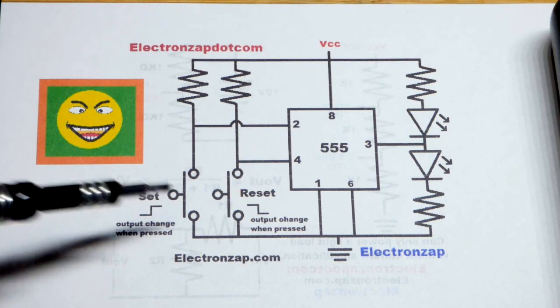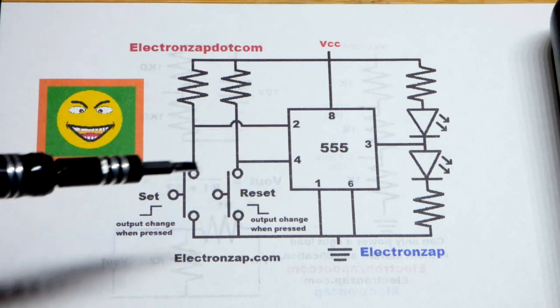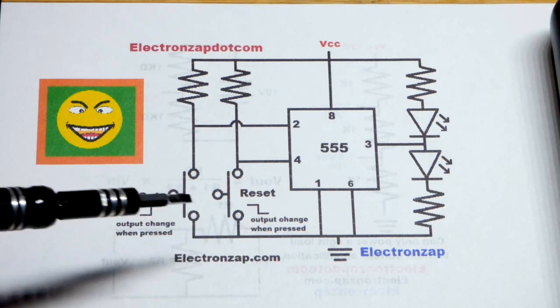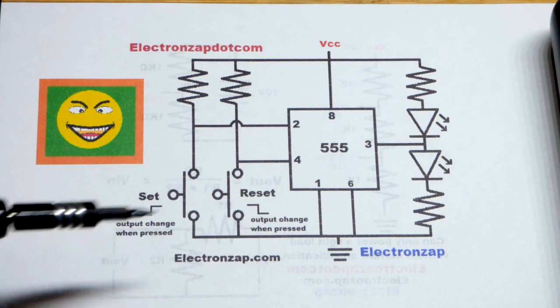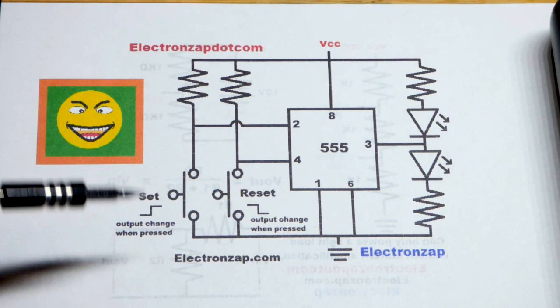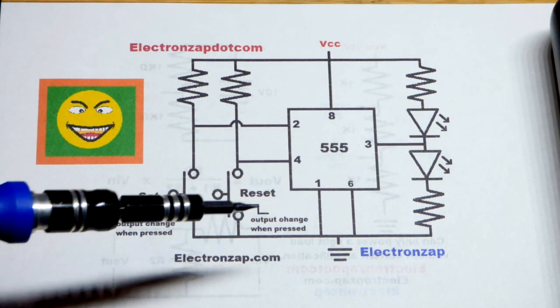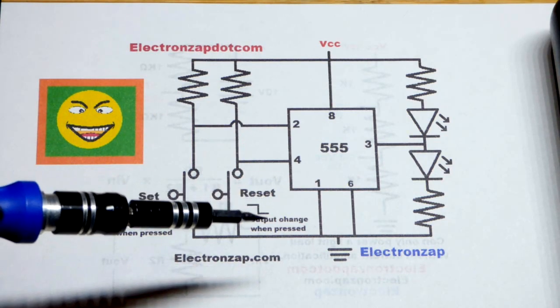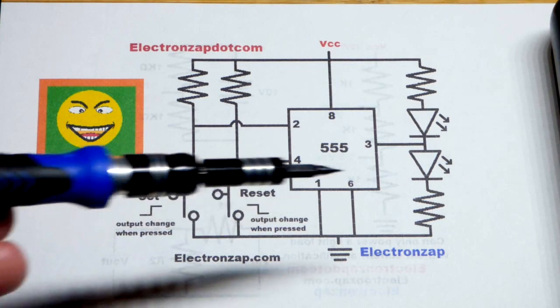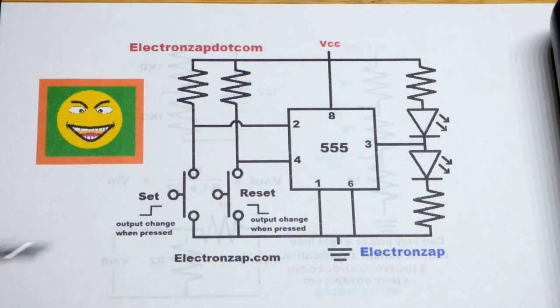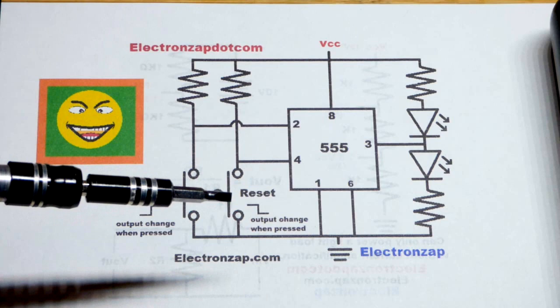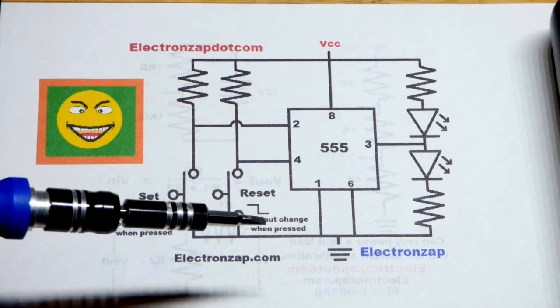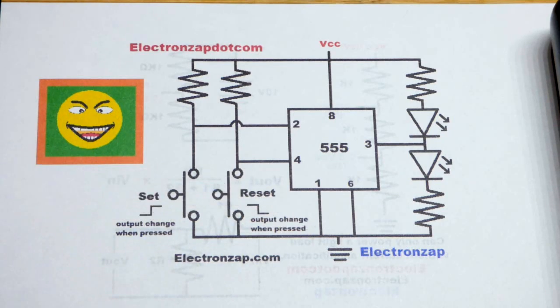This is the set switch right here, goes to pin 2. When we connect that to ground by closing the switch, the output if it's low will go high. If it's high already it'll just stay high. When the output is high, pressing the reset button will set it low and then it'll stay low. It's stable - we have to press a button to make a change. Holding down the reset will make it low no matter what. The reset overpowers anything, so you got to make sure you release it before you hit set again.